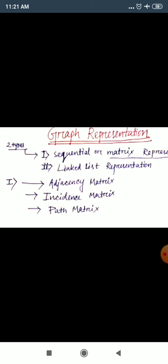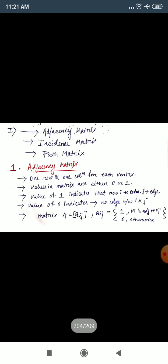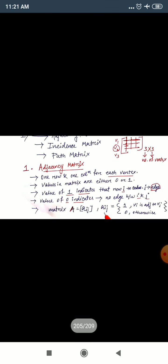First, let's see what an adjacency matrix is. In the adjacency matrix, there are key points. First, you have one row and one column for each vertex. So if you have a three-vertex graph, you make a 3×3 matrix — one row and one column for each vertex, so V1, V2, V3 get their own row and column.